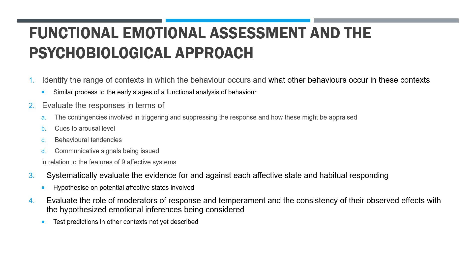Let's now look at how we make assessments of emotion in the psychobiological approach. Fundamental to this is the functional analysis of behaviour described previously. This is a skill that takes time and I'm only going to provide an outline here. The first point to make is that the functional analysis of behaviour underpins this process. We identify the range of contexts in which the behaviour occurs and what other behaviours occur in these contexts — we not only focus on the target behaviour, but ask what other behaviours occur in that context, because we're trying to understand the totality of behaviour, and we undertake a functional analysis for each of those.